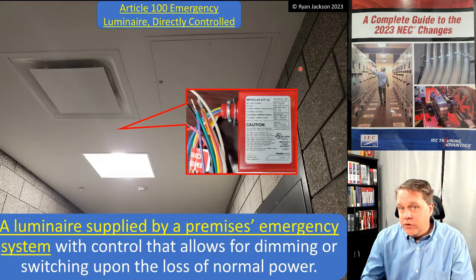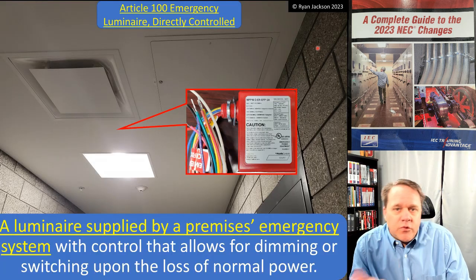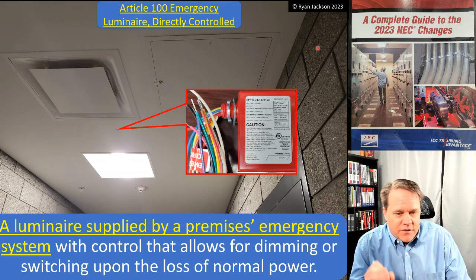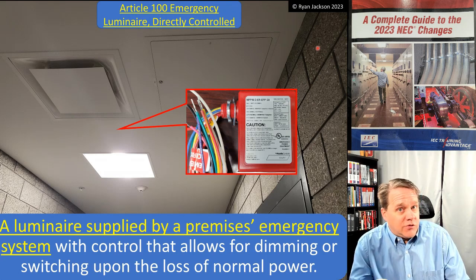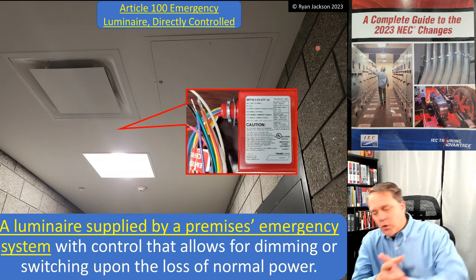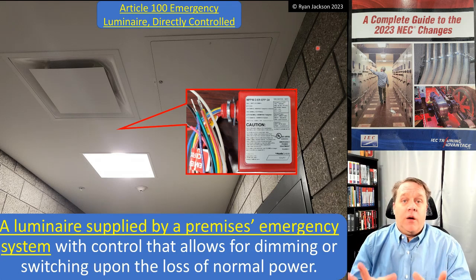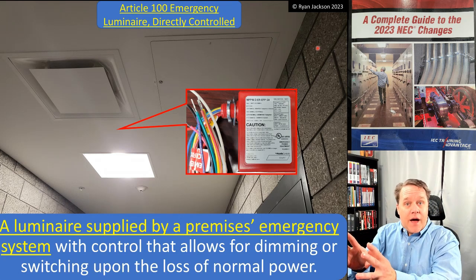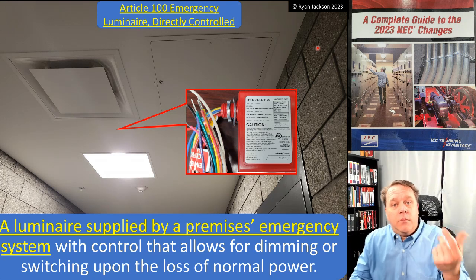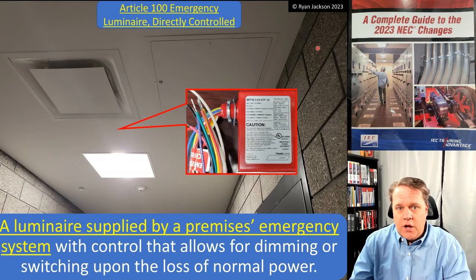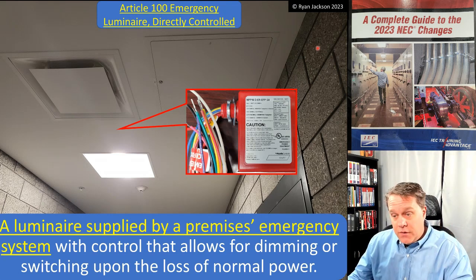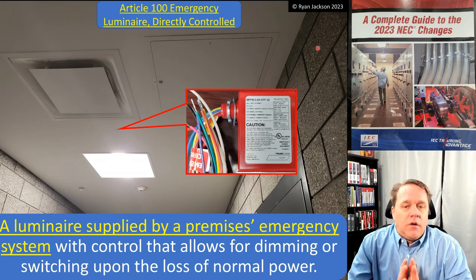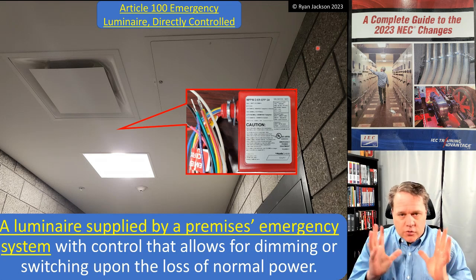The definition was revised for clarity. This would be a luminaire that's supplied by a premises emergency system with control that allows for dimming or switching upon the loss of normal power. If you don't have a backup power source, you don't have one of these. If all you have is a battery pack — like a bug eye, an exit sign, or an emergency ballast — this isn't what we're talking about. This is where we have an actual emergency system: a generator, fuel cells, whatever our backup system is.